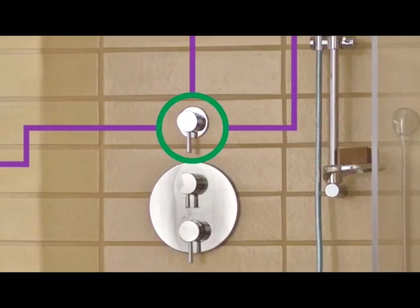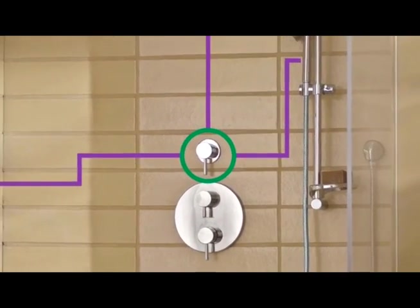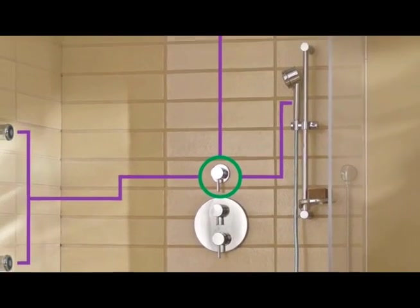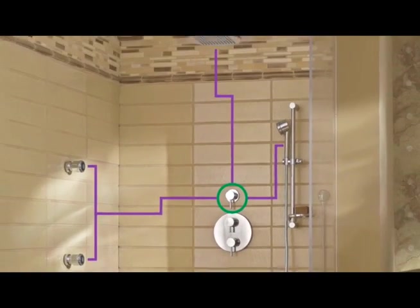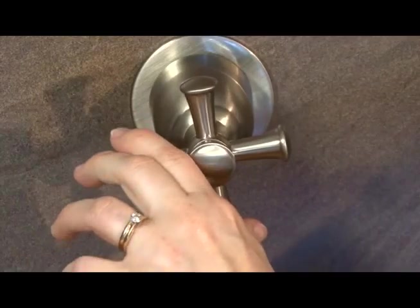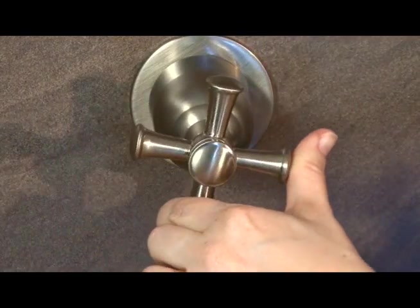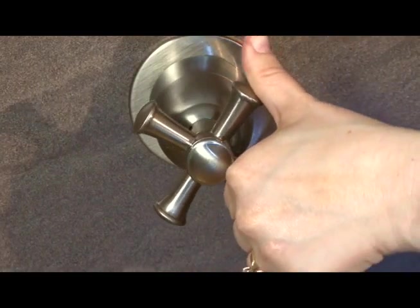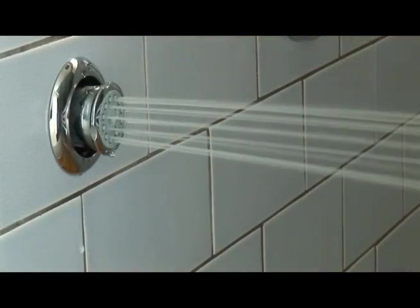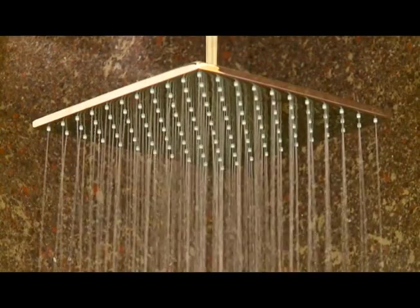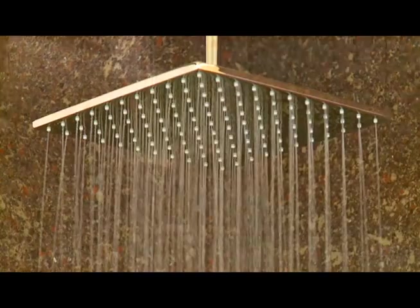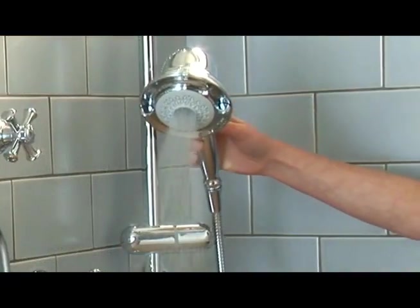There are two different types of control valves: diverter valves and on/off volume controls. Diverter valves direct the water flow between two and three different spray outlets. They do not control the on/off function of the water, and they usually toggle between each of the different spray outlets, meaning you can't turn them all on at once.